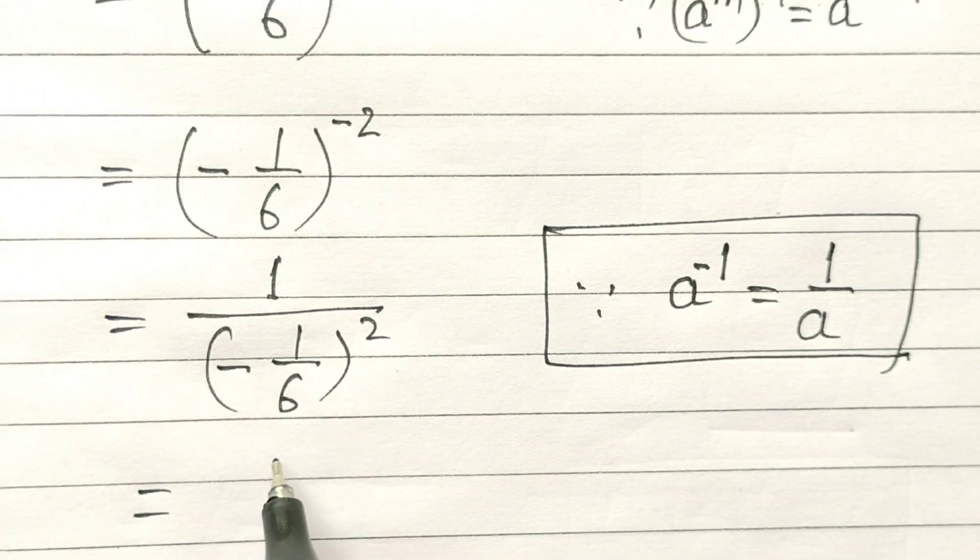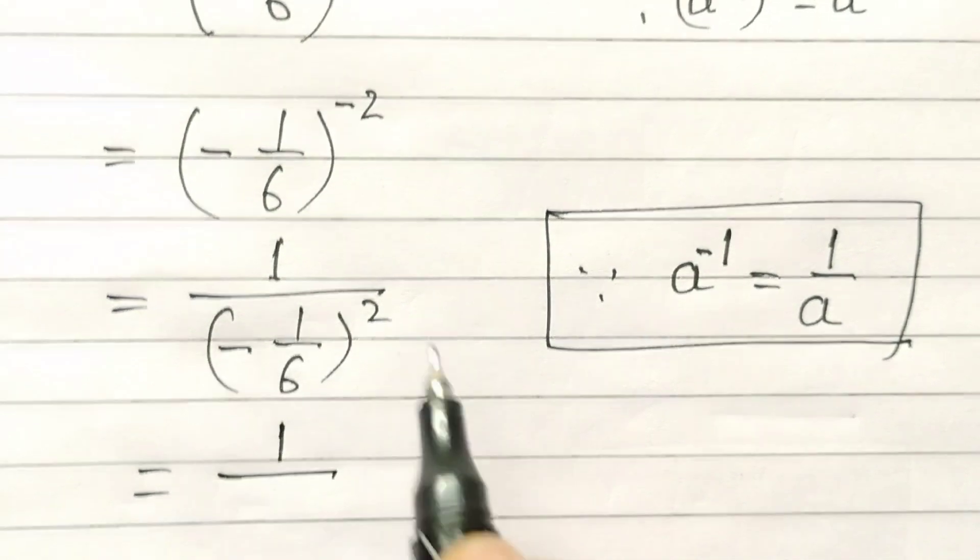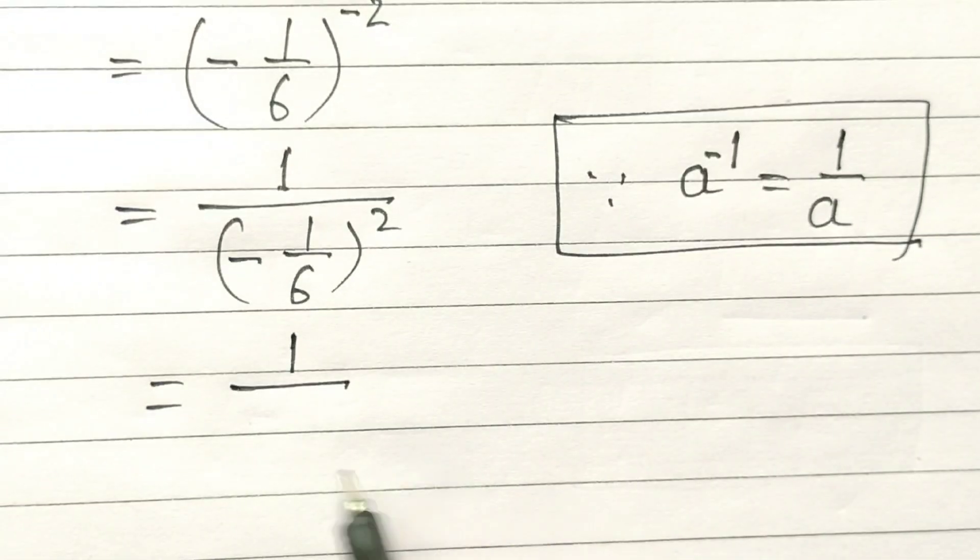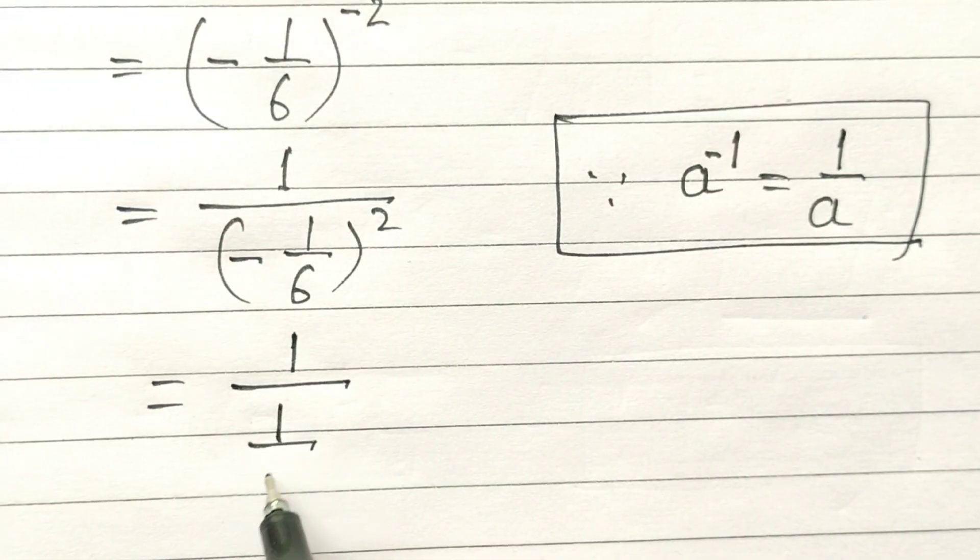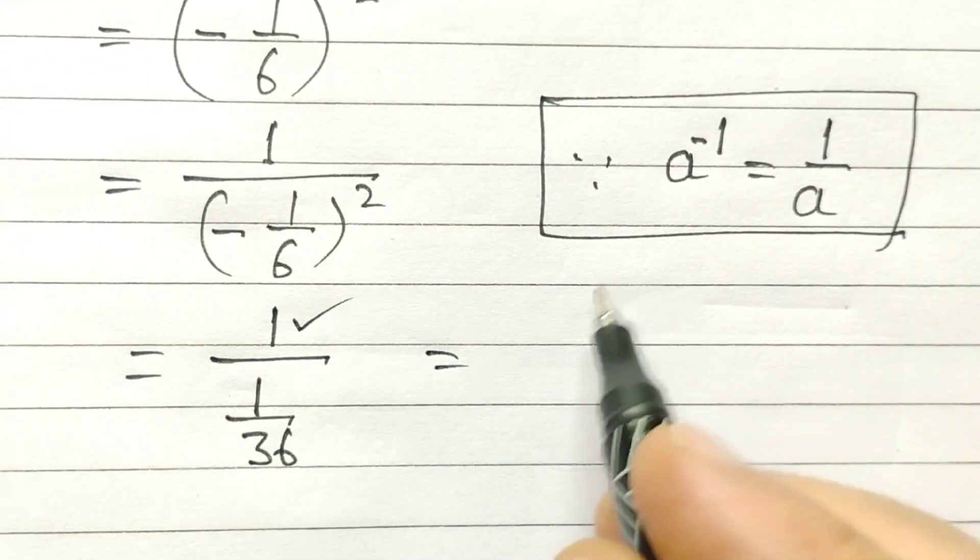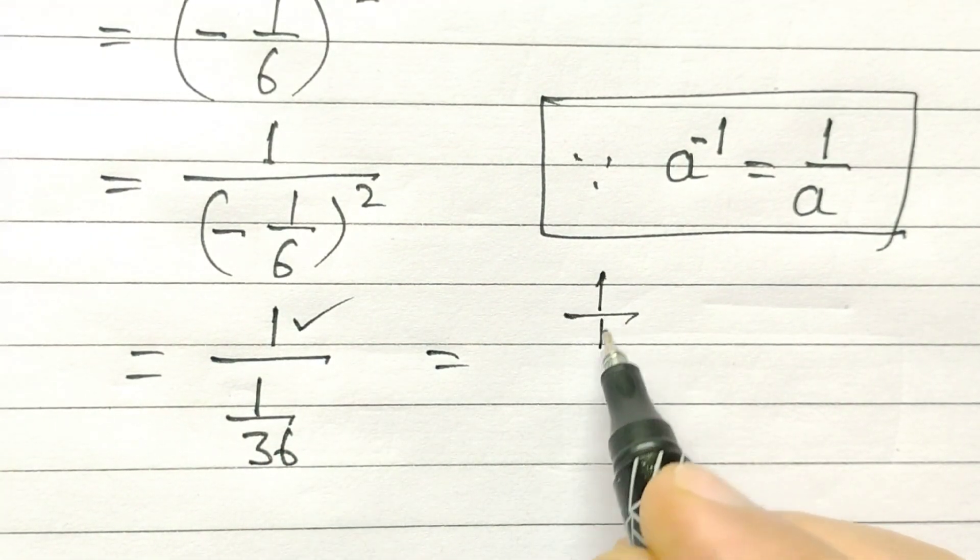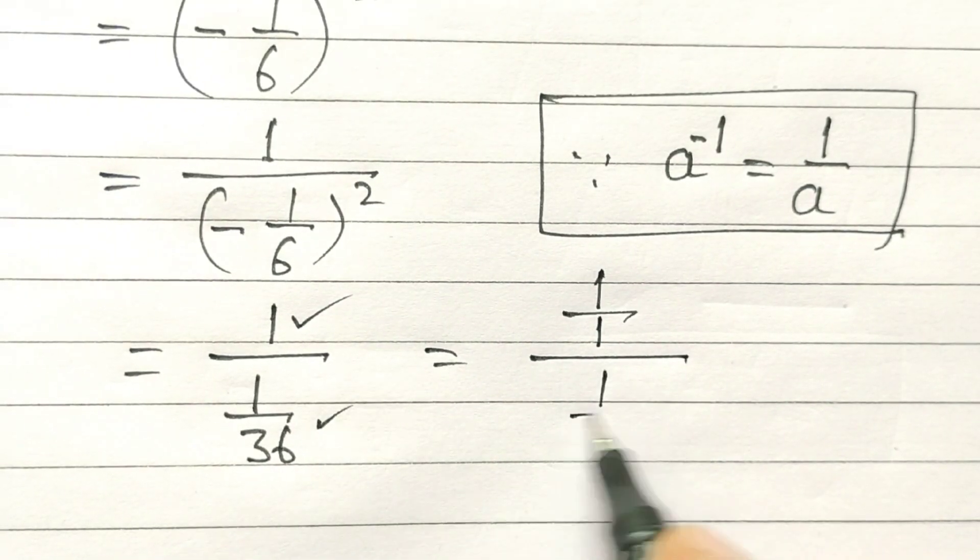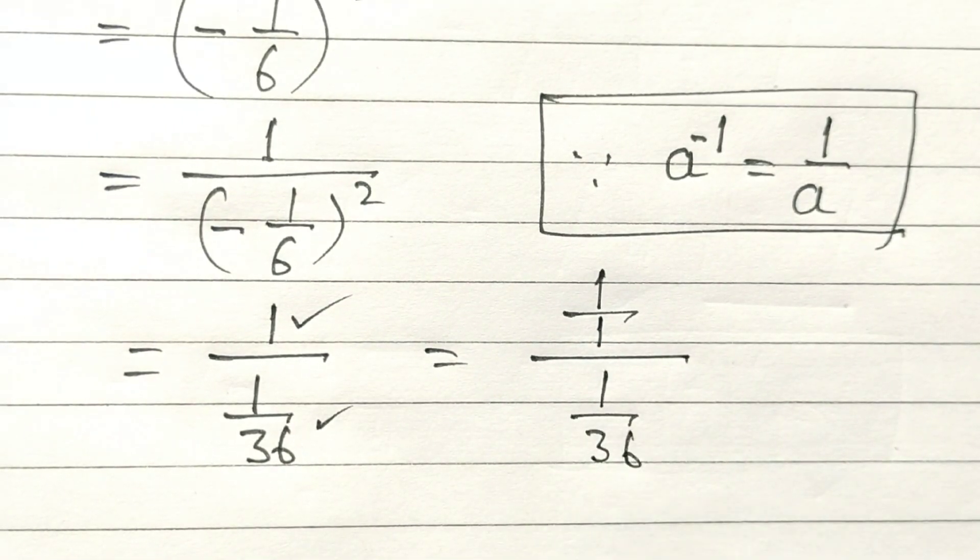So this will become 1 over 1/36. Now, 1 can be written as 1 over (1/36).